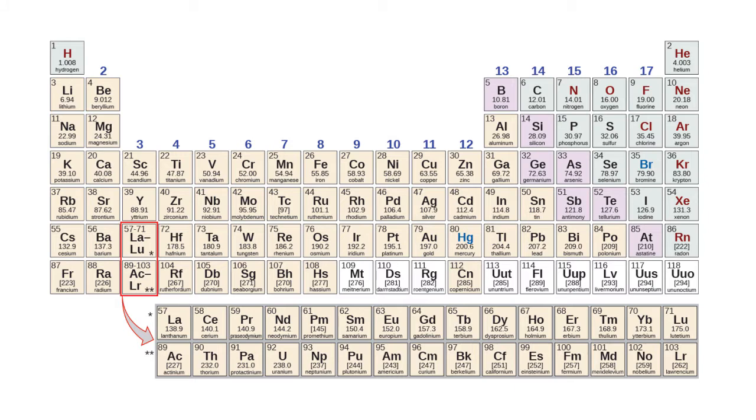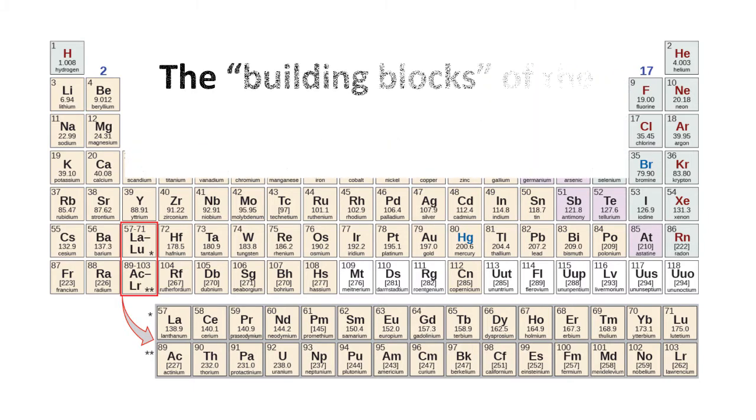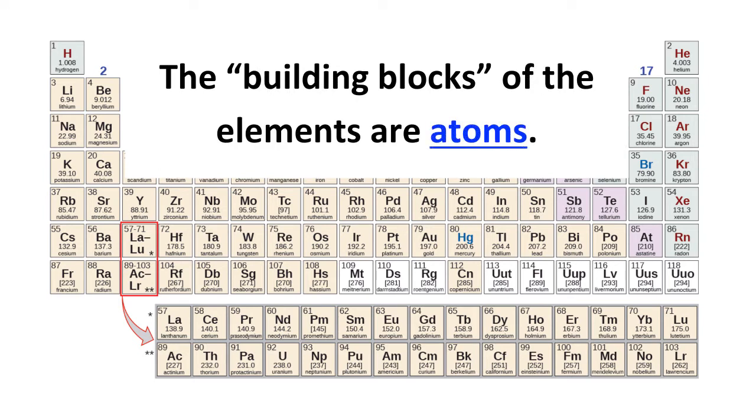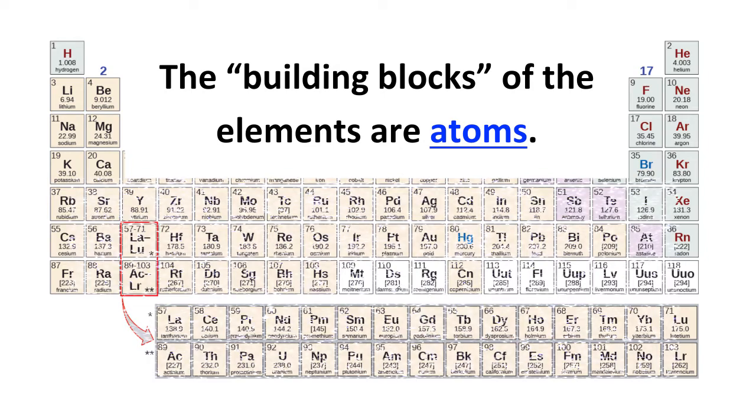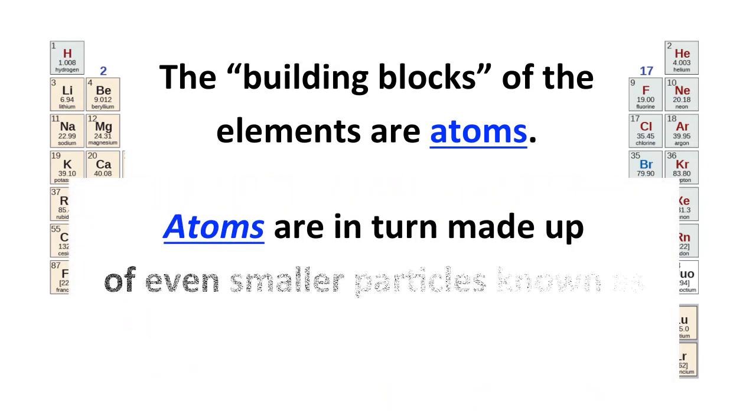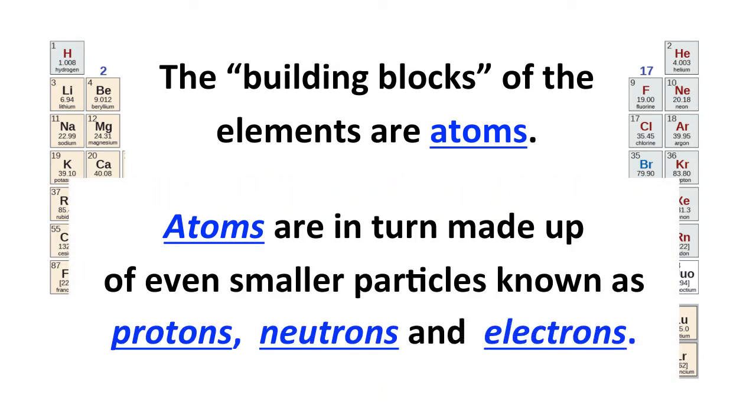We'll start with the elements. These, of course, are the substances that make up our world, but the ones that can't be simplified chemically. And the building blocks of these elements are what are called atoms. And atoms, in turn, are made up of even smaller particles known as protons, neutrons, and electrons.